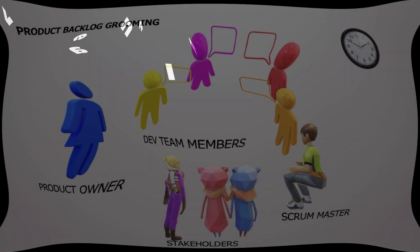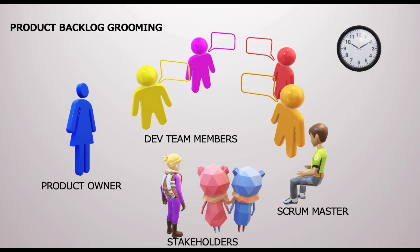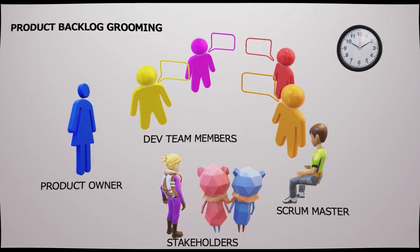Fourth, effective planning. Sprint planning or backlog grooming activities take a lot of time if the user stories are not organized. User story mapping arrangement is an efficient exercise, very effective in making these planning sessions a lot easier.